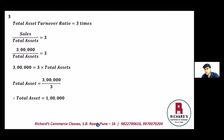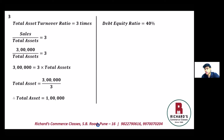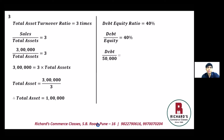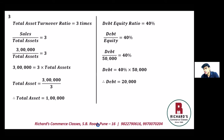We are also given debt equity ratio of 40% and shareholders equity of 50,000, so we can find debt. Debt equity ratio formula: debt divided by equity equals 40%. Equity is 50,000, so debt divided by 50,000 equals 40%. Therefore debt equals 40% of 50,000, which is twenty thousand rupees.